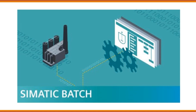Simatic Batch. Simatic Batch is a software solution provided by Siemens for managing and controlling batch processes in industries such as chemical, pharmaceutical, or food processing. It allows users to define, monitor, and control the execution of batch operations, ensuring consistency and repeatable production.